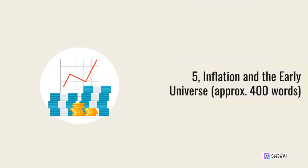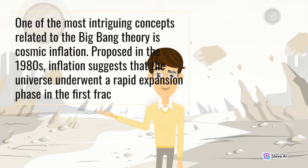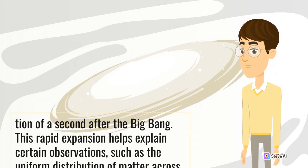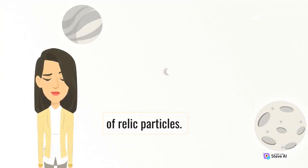Inflation and the Early Universe, approximately 400 words. One of the most intriguing concepts related to the Big Bang Theory is cosmic inflation. Proposed in the 1980s, inflation suggests that the universe underwent a rapid expansion phase in the first fraction of a second after the Big Bang. This rapid expansion helps explain certain observations, such as the uniform distribution of matter across vast regions of space and the absence of certain types of relic particles.